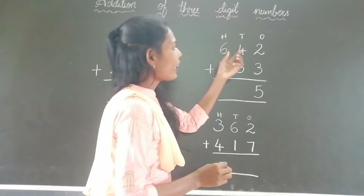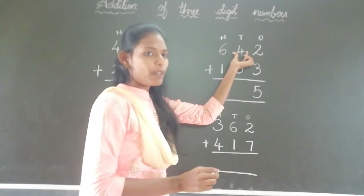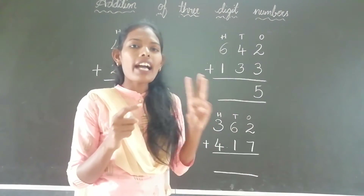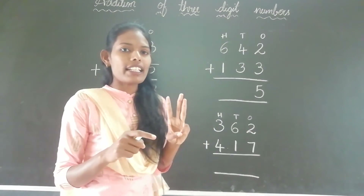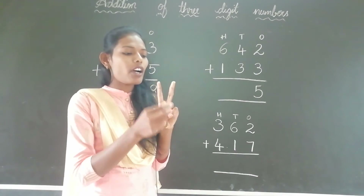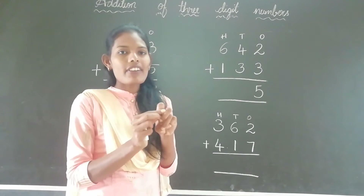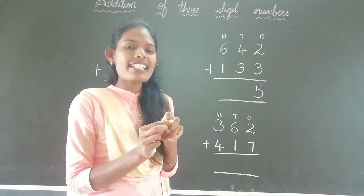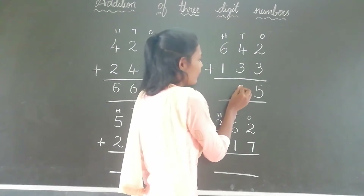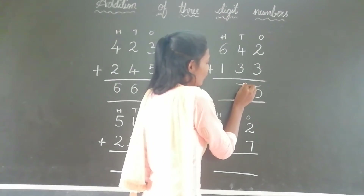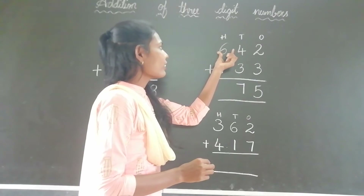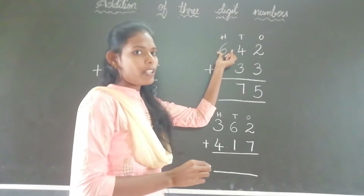Now here we are adding the tens place digits. So keep 4 in your mind and take 3 fingers. What comes after 4? 5, 6, 7. The answer is 7. Now we are adding the hundreds place digits.